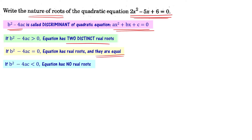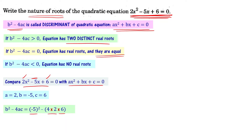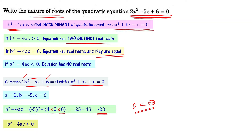First, we find the value of b² - 4ac for this equation. Comparing 2x² - 5x + 6 = 0 with ax² + bx + c = 0, we get a = 2, b = -5, and c = 6. Substituting: (-5)² - 4×2×6 = 25 - 48 = -23. Since the discriminant value is -23, which is less than 0, the given equation has no real roots.